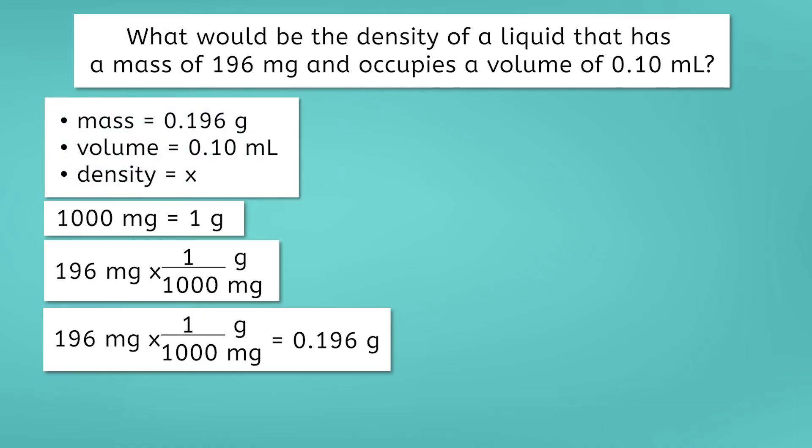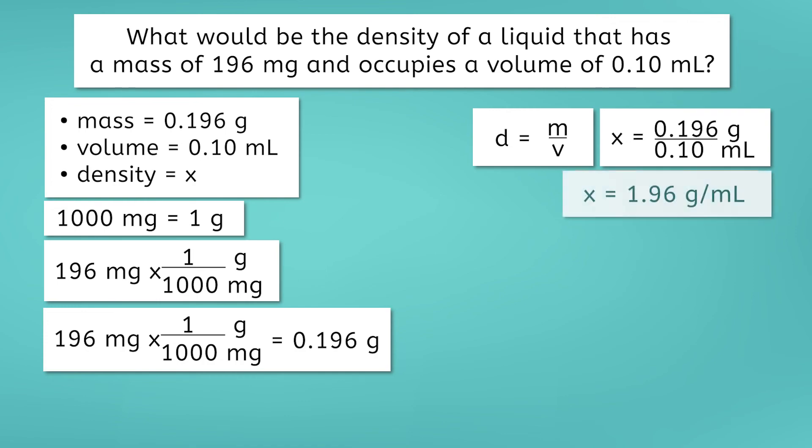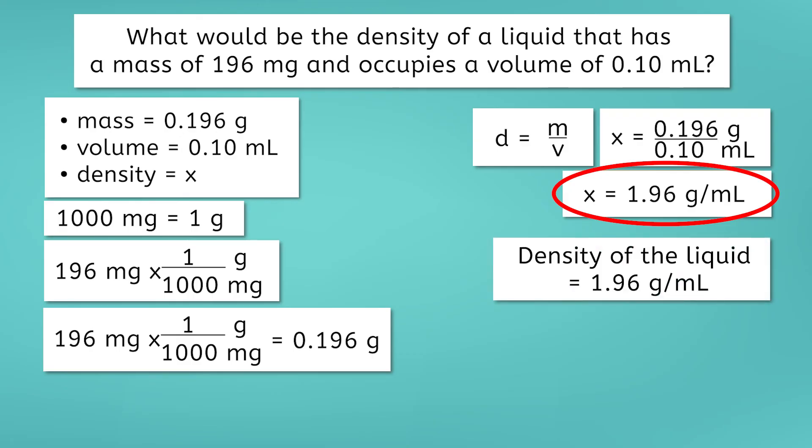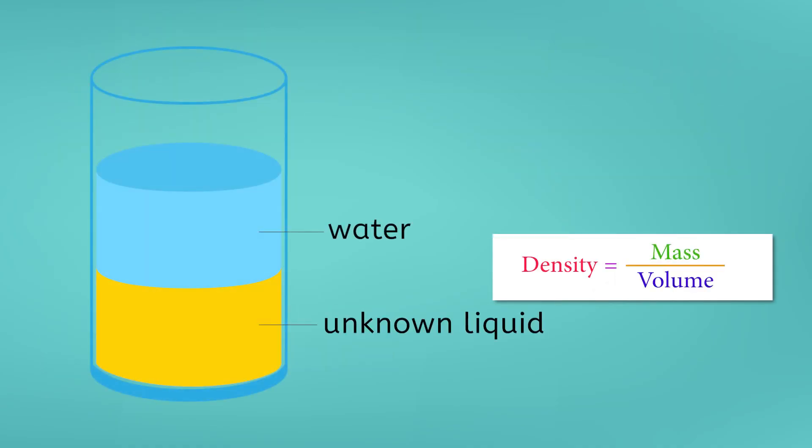Let's put that in our list for mass. Now that we have our list all set with the correct units, we can plug the values into the formula and solve. The density of the wood is equal to 0.196 grams divided by 0.10 milliliters. Using a calculator, we can find that density equals 1.96 grams per milliliter. So the density of the liquid is equal to 1.96 grams per milliliter. If we added this liquid to a container of water, would it form a layer above or below the water? It would form a layer below the water because its density is greater than the density of water.